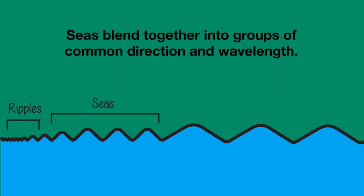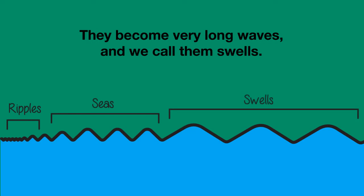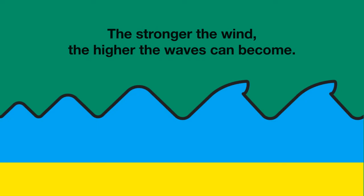A third and last kind of wave results from seas blending together into groups of common direction and wavelength. They become very long waves and we call them swells. Now, how do wind waves grow?